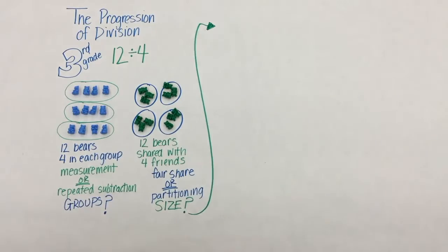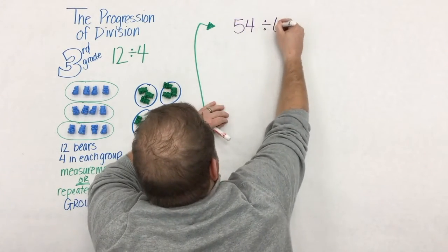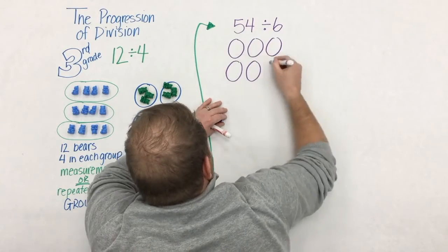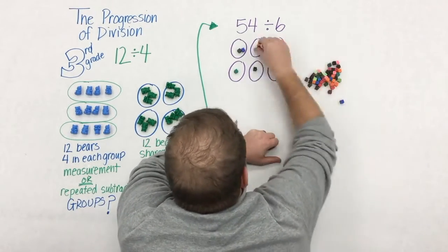In one example, we have the group is unknown, and in the other, the size of the group is unknown. As students begin to develop their understanding of division, they probably begin to really rely on this fair share model.